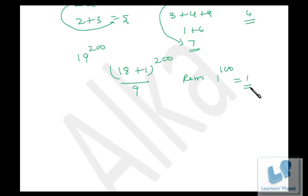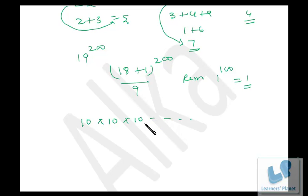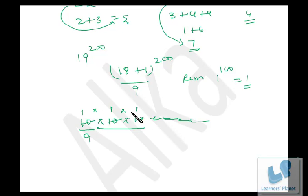So our answer is 1 — the digital sum of 19 raised to 100 is 1. To clarify how we find this remainder: suppose you have 10 cubed divided by 9. You divide and find the remainder in each factor — here the remainder is 1, here 1, and here 1. Multiply all of them and the final remainder when 1000 is divided by 9 is 1.